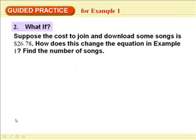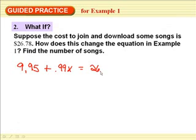Number 2, what if, suppose the cost to join and download some songs is $26.78. How does this change the example in number 1, find the number of songs? Well, it changes the total cost. It doesn't change. It still costs $9.95 to join. It still costs 99 cents per song. The only thing that's changing is the total cost that you spent. Do I have those numbers right? I do.